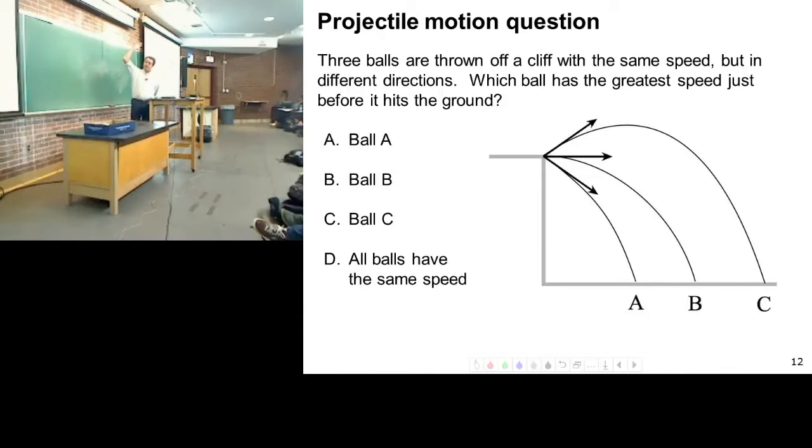All in favor of ball A, greatest speed. All in favor of ball B, greatest speed. All in favor of ball C, greatest speed. Alright, some of you are brave enough to answer on this, the rest of you not brave enough to answer. This is the value of those clickers, is that everybody answers and they don't look at their neighbors so much.